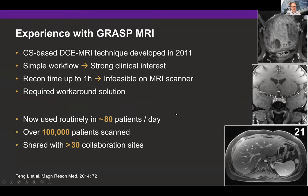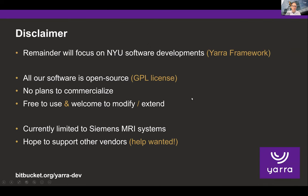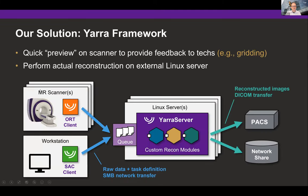This was possible because of the automation, and we also shared our reconstruction algorithm with a large number of collaboration sites by making our software available. A quick disclaimer: on the following slides I will show the NYU-developed software pipeline we call the Yara framework. All our software is open source, released under a GPL license, with no plans to commercialize it — it's completely free to use, and you can download, modify, and extend the source code. It is currently limited to Siemens MRI scanners, but we hope to support other vendors as well at some point.